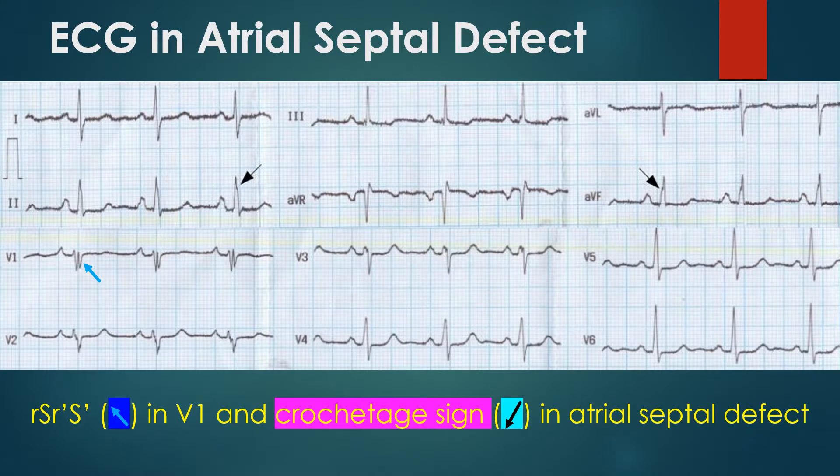ECG shows RSR' pattern and crochet touch sign in atrial septal defect. The crochet touch sign was described by Heller and associates in 1996. It is a notch near the apex of the R wave in inferior leads, with a sensitivity of about 73% and specificity of 92% when present in all three inferior leads.